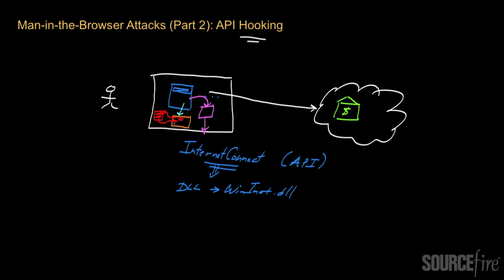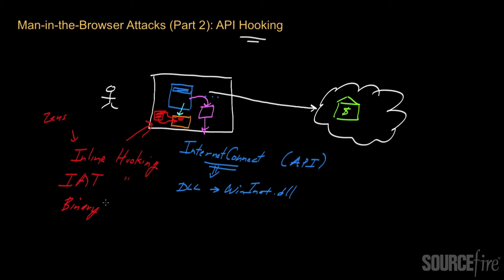This technique is known as inline hooking — you can look it up separately for more detail. There are other techniques for hooking as well. For example, there's a technique known as Import Address Table, or IAT hooking, which is very popular for a lot of malware. Inline hooking is used by Zeus, a very popular man-in-the-browser banking trojan. IAT hooking is very popular and seen in rootkits all the time. Another technique is called binary patching. I covered some of these hooking techniques in more detail in my series of videos on rootkits.